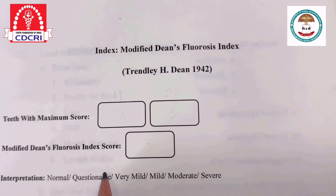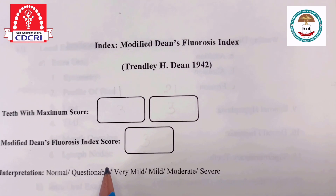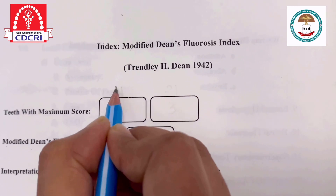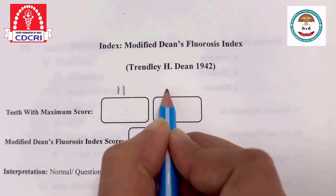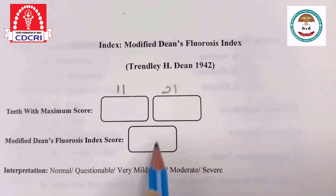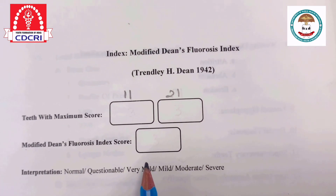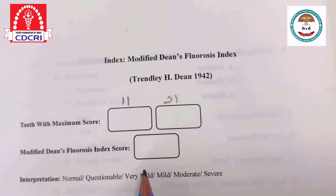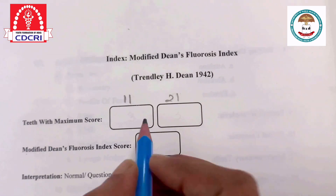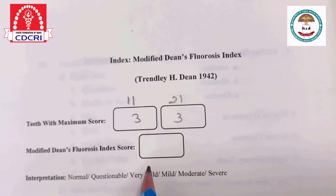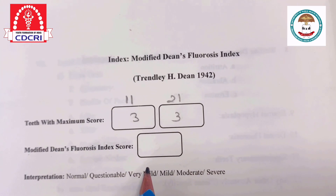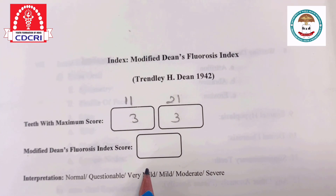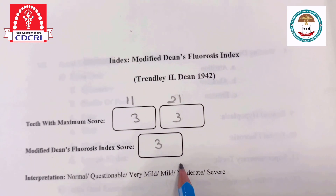Here in this patient, the teeth with maximum score are 1-1 and 2-1, showing brown stains on the enamel surface suggesting moderate criteria on both teeth. Hence, the score for the Modified Dean's Fluorosis Index is 3, that is moderate.